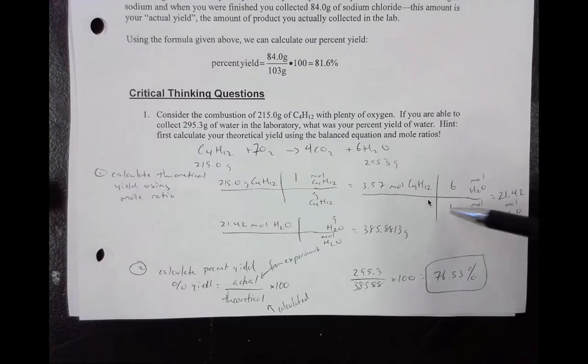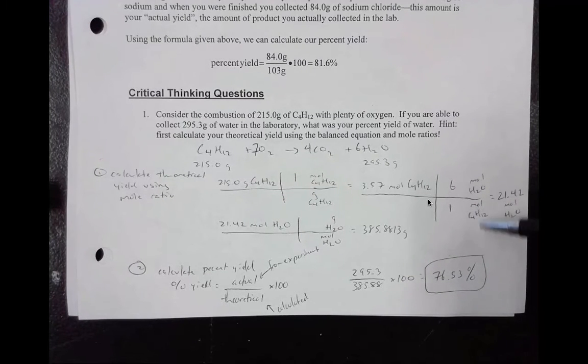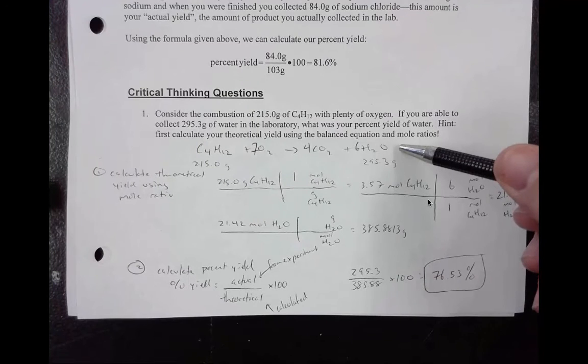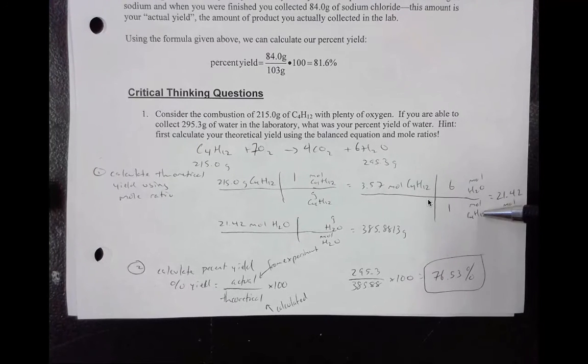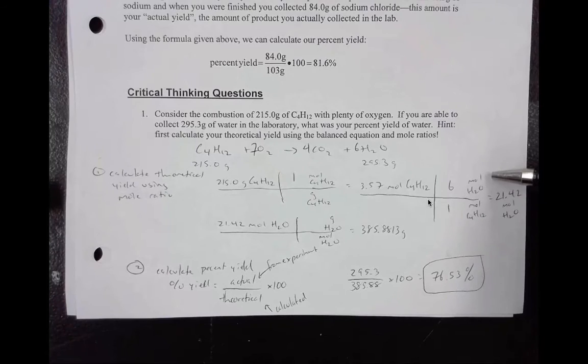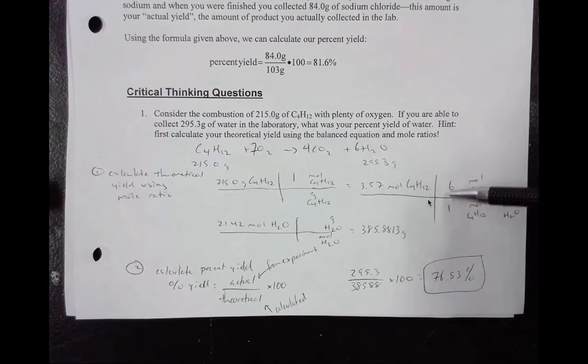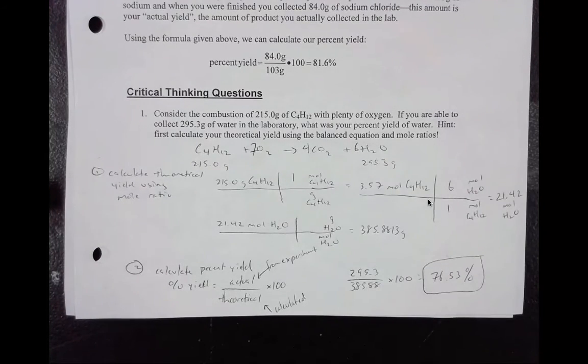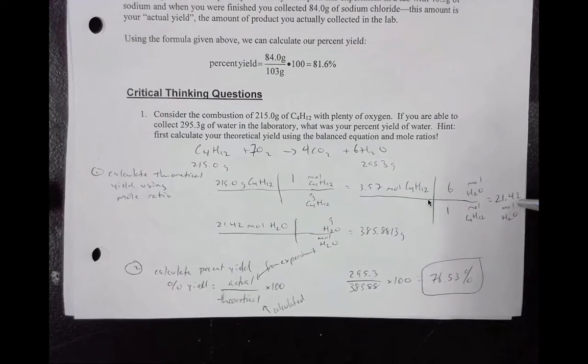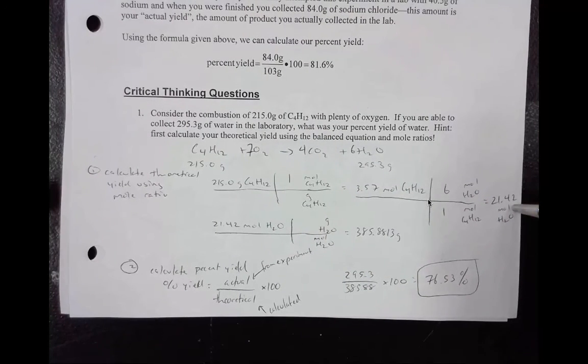I then set up the next T. This is the one where we go to the moles of water. So we use the coefficients from the balanced equation. So we want our C4H12 to cancel on the bottom, moles of water on top. Now we plug our values in. You plug a 6 next to the water, a 1 next to the C4H12. Make sure you can get this 21.42 as your answer.